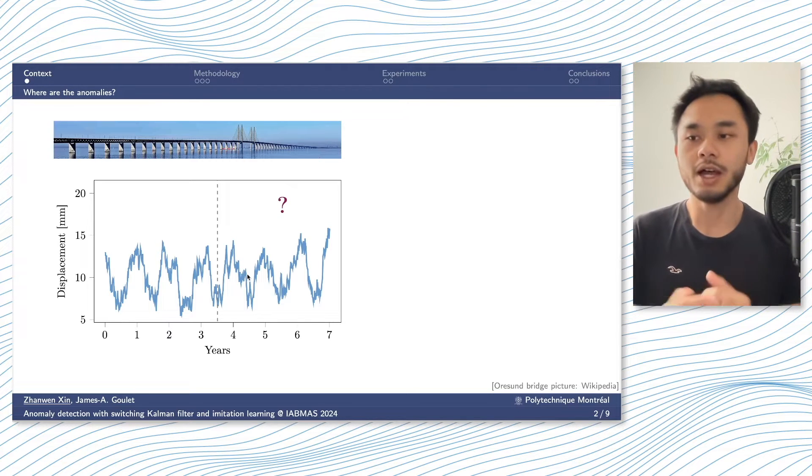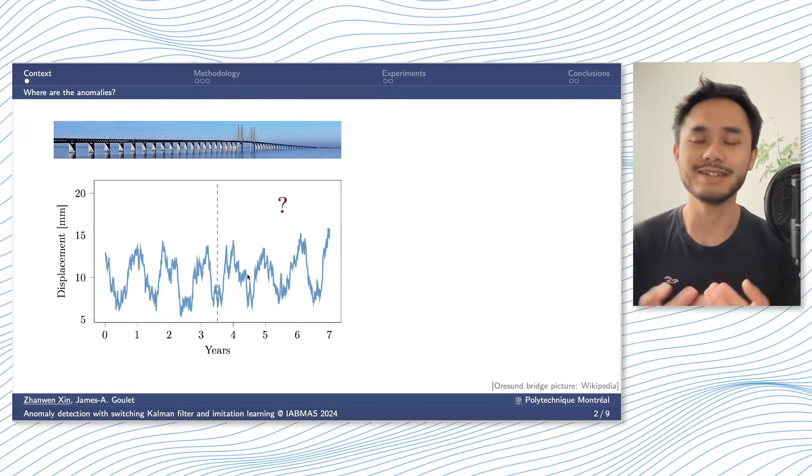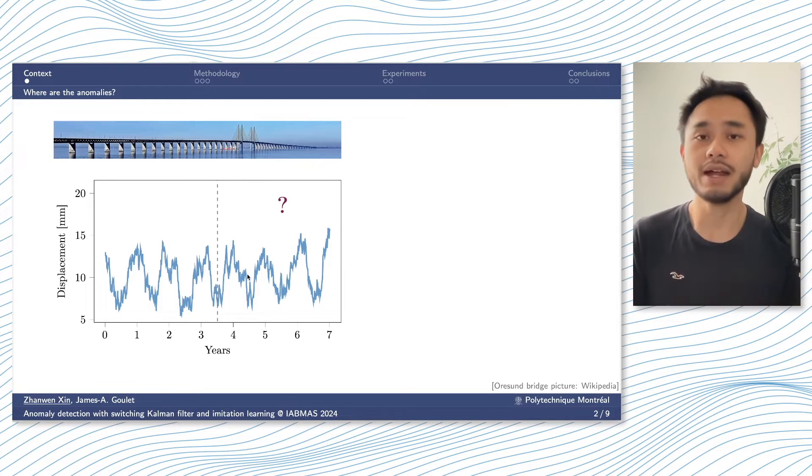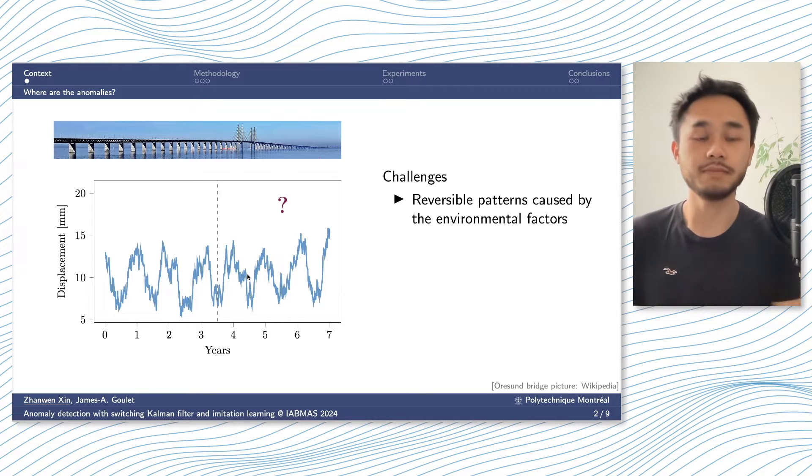In addition, most of the time, the change in the baseline is really subtle that even with our eyes, it's hard to identify where the anomaly is. So our goal is to have a data-driven method that can detect the anomaly automatically without human intervention, and by doing so faces a few challenges.